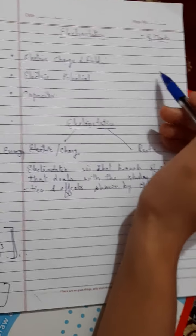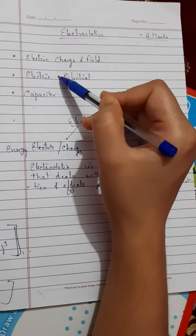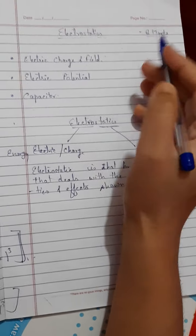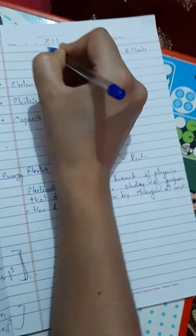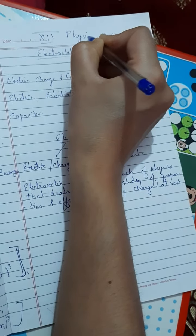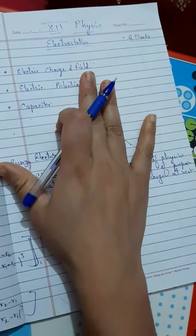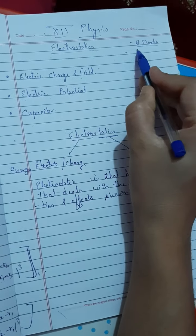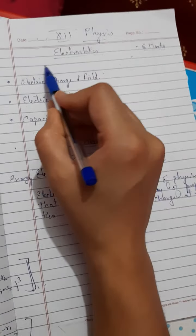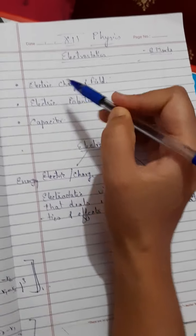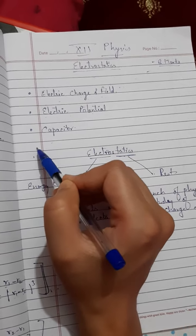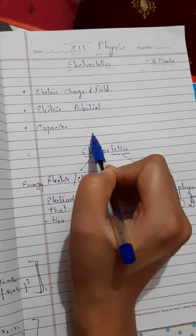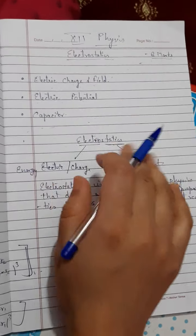Good morning students, today we are going to discuss the first unit of Physics Class 12th, which is Electrostatics. The weightage of this unit is eight marks. This unit is divided into three chapters: first is Electric Charge and Field, second is Electric Potential, and third is Capacitor.